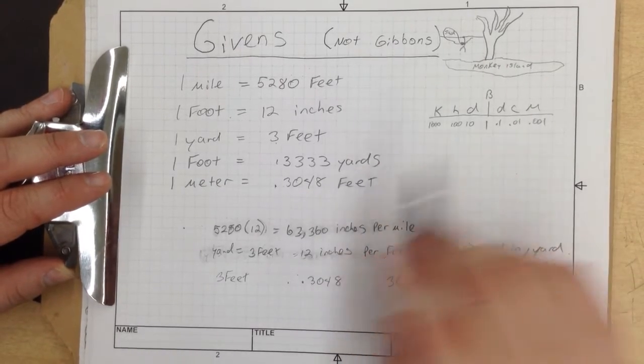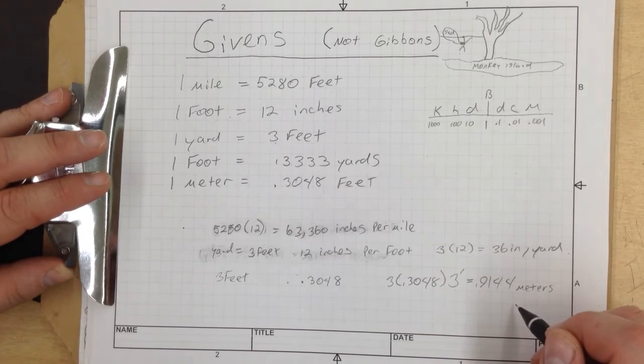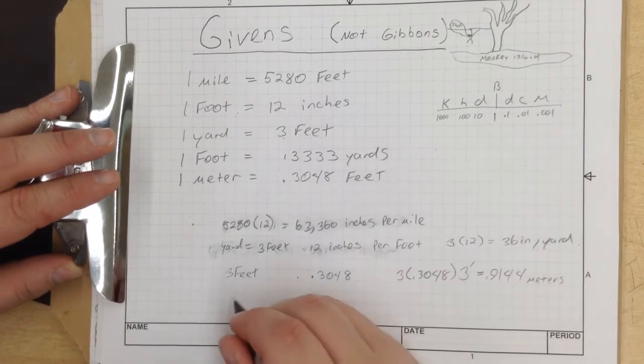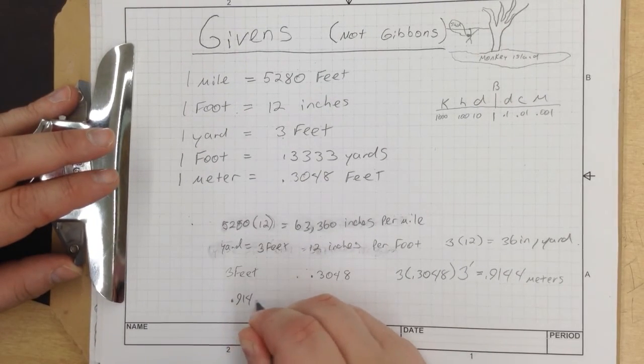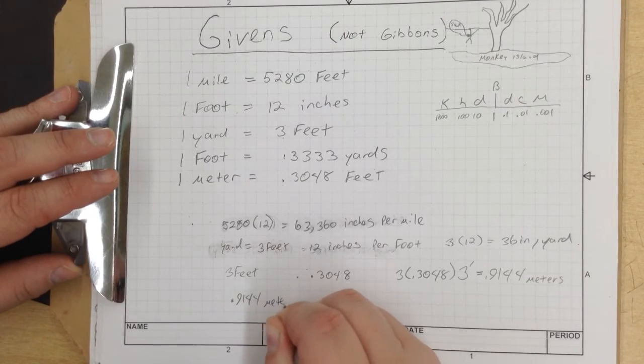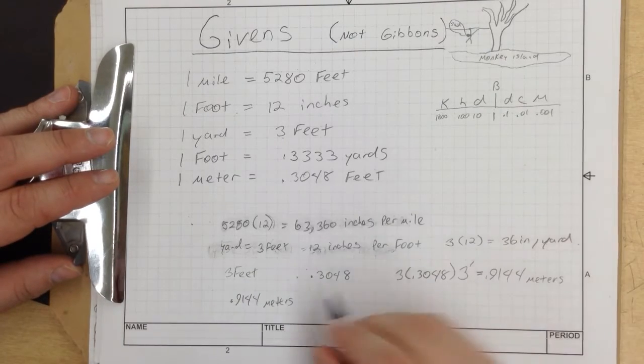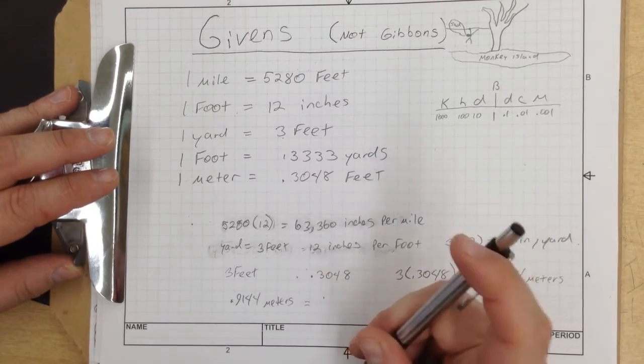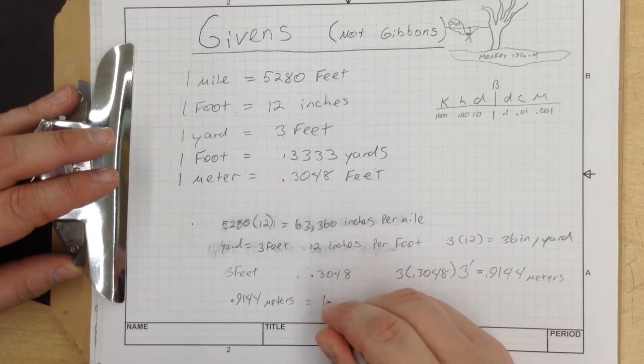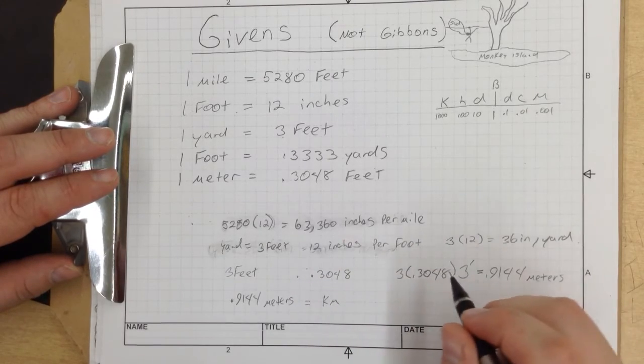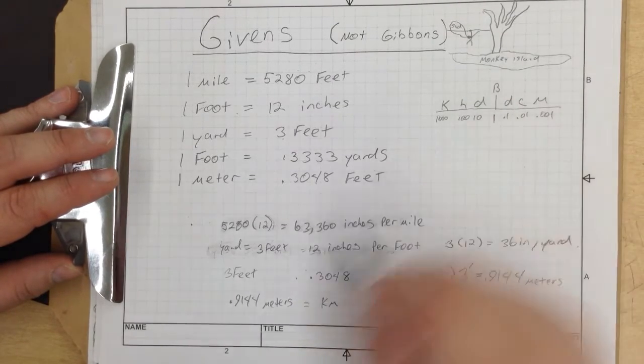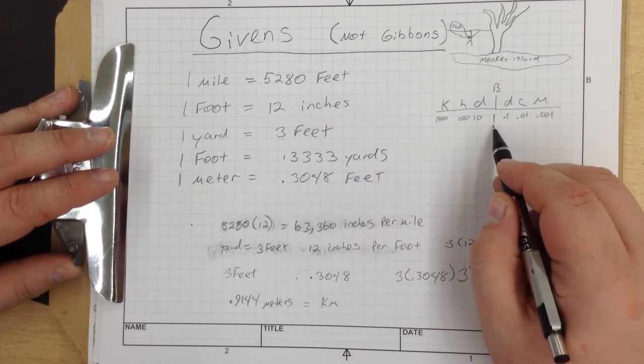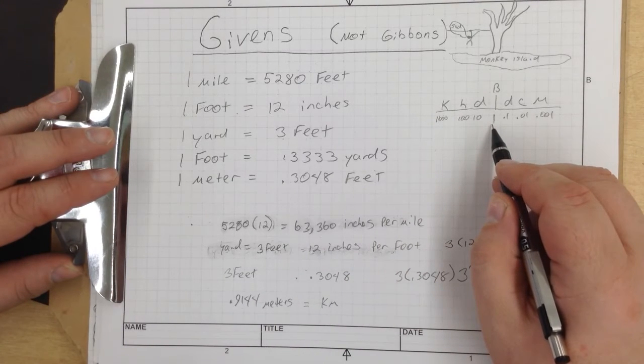With this, you can figure out, we have 0.9144 meters. Now, how many kilometers is this? We have 0.9144 meters right here. Now we have to figure out how many kilometers.